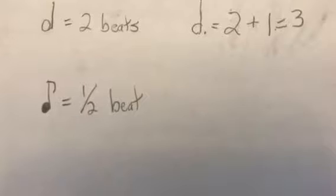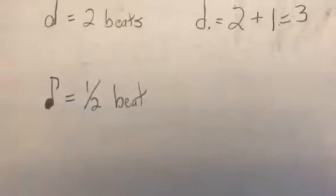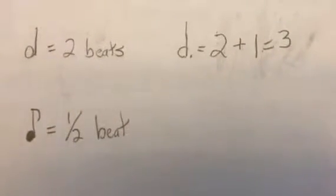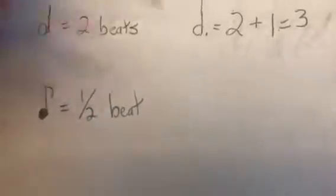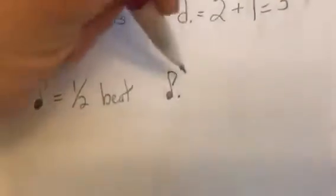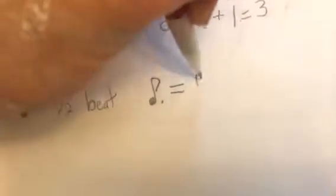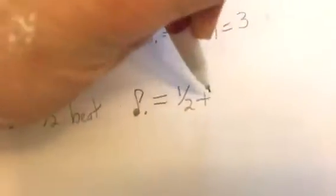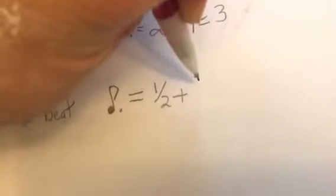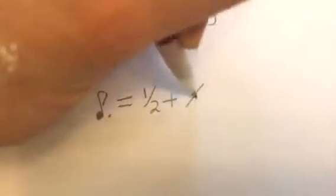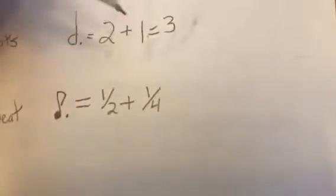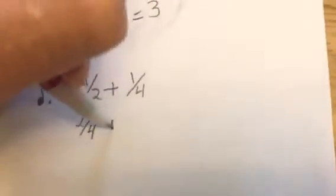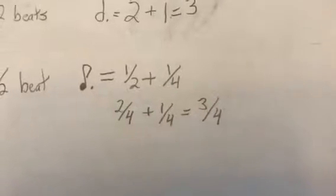We're going to use that same logic on the eighth note — it's a little bit trickier. Hopefully your math teacher has taught you well. In 4/4 time, the eighth note gets one half of a beat. If I put a dot next to my eighth note — dotted eighth note — we take our one half and add half of one half, which is one-fourth. So we add one-half and one-fourth. With a common denominator: one-half equals two-fourths; two-fourths plus one-fourth equals three-fourths. That is how long a dotted eighth note is — three-fourths of a beat.